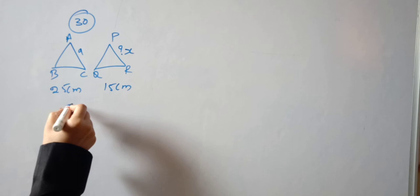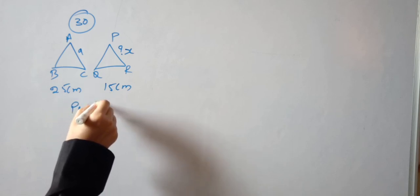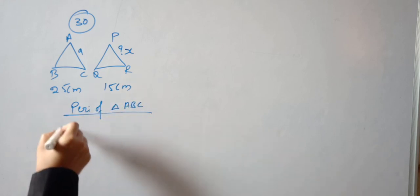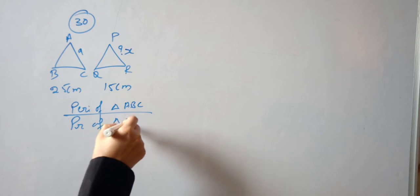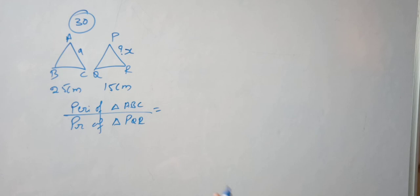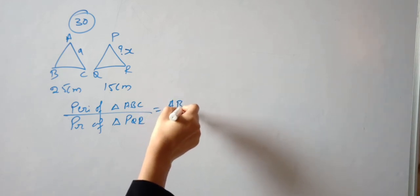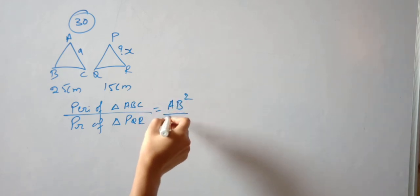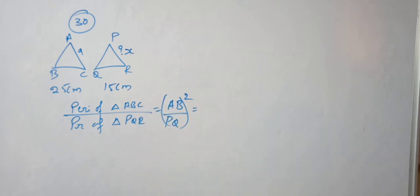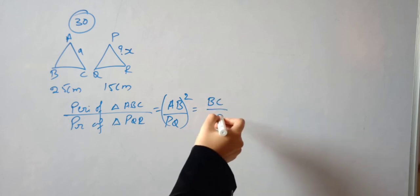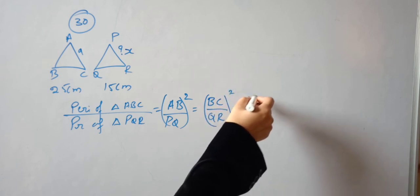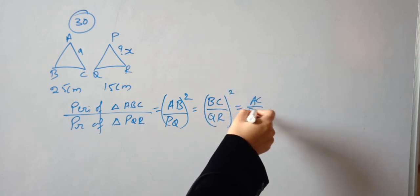The perimeter of triangle ABC upon the perimeter of triangle PQR is equal to the corresponding ratios. So AB upon PQ whole square, which is equal to BC by QR whole square, is equal to AC by PR whole square.